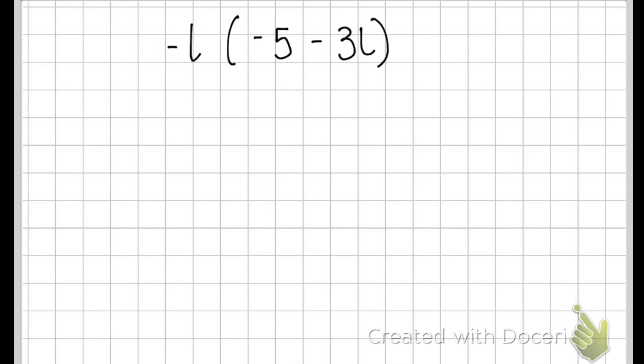So moving on to the last question in this video we have -l and then we have -5 take away 3l inside of the brackets. So as always I'm going to do -l multiplied by -5. So two negatives together gives us a positive. So that's going to change it to 5l.